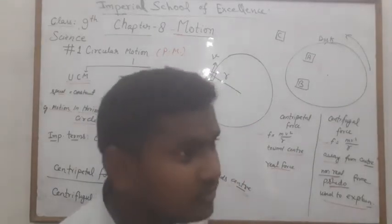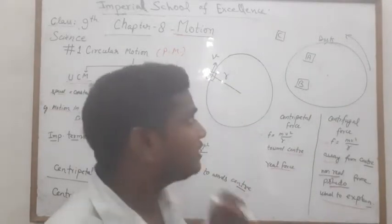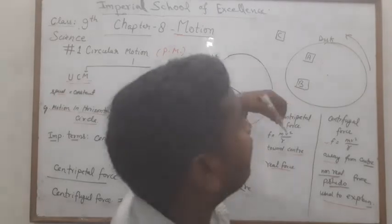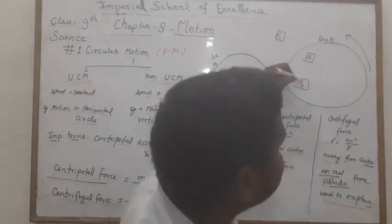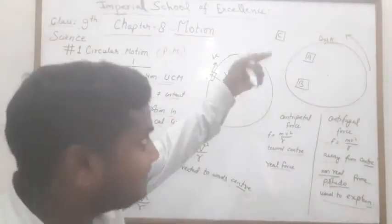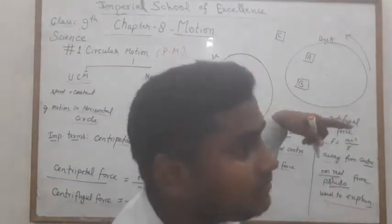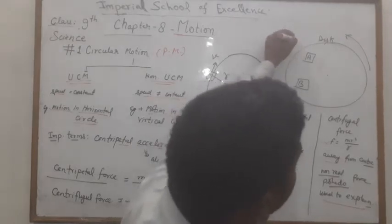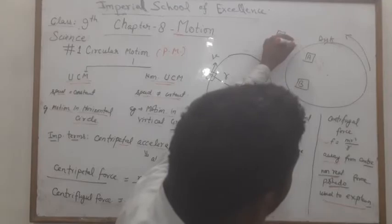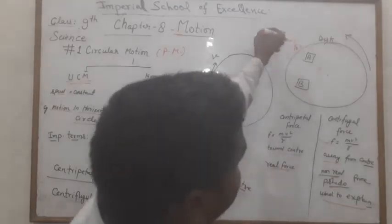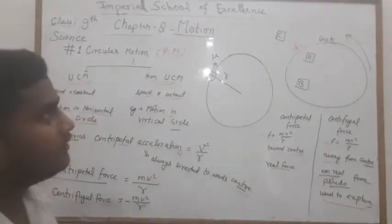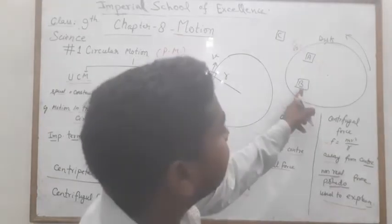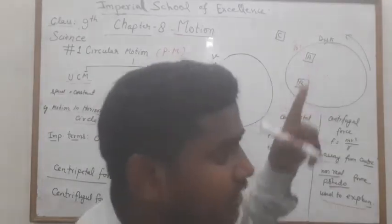B कहता है कि A मुझे rest में दिखाई देता है, लेकिन C ने बताया कि A पर centripetal force लग रहा है। तो अपनी situation explain करने के लिए B कहता है कि इस पर एक और force लग रहा है - क्योंकि मैं भी इसी disc पर हूँ और motion में हूँ। इसलिए इस पर एक centrifugal force लग रहा है, away from the center, जो centripetal force को balance करता है। इसीलिए A मुझे rest में दिखाई देता है।